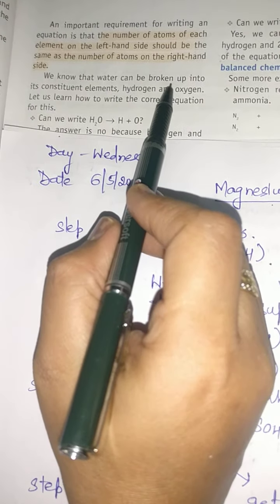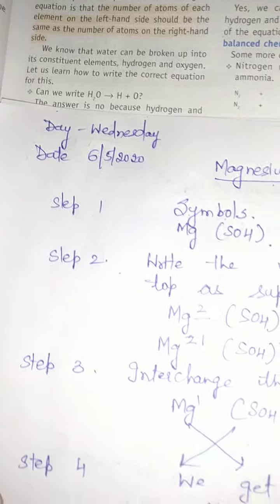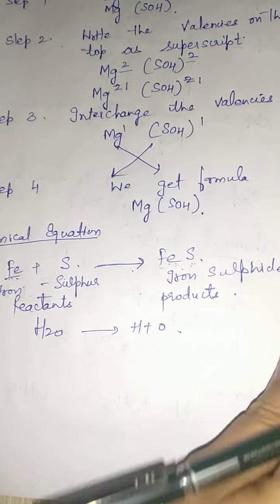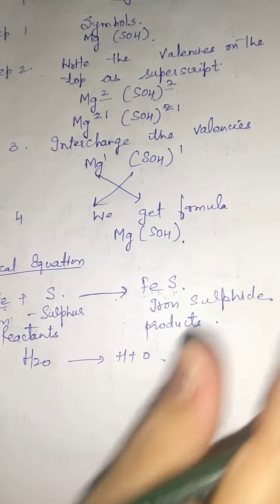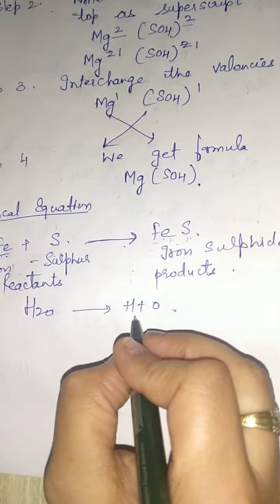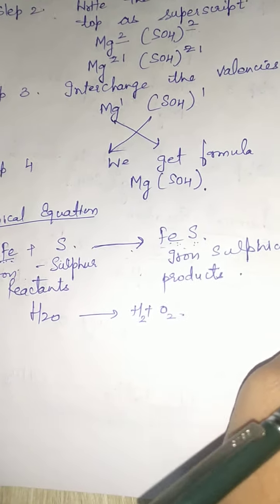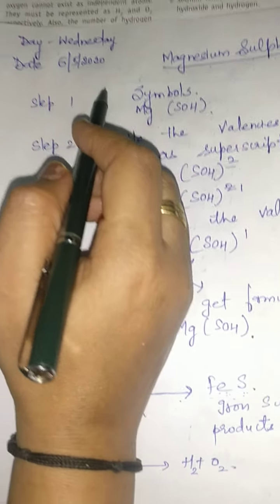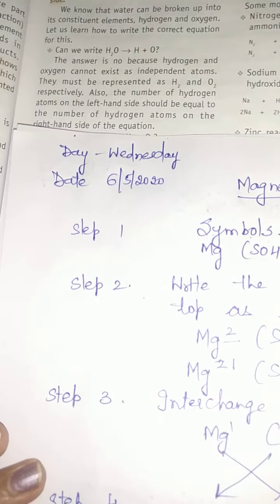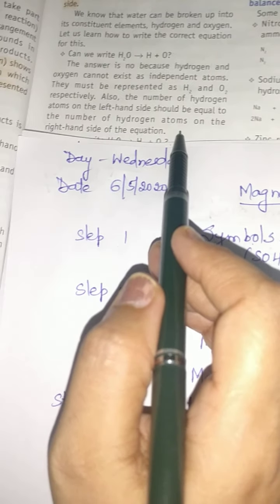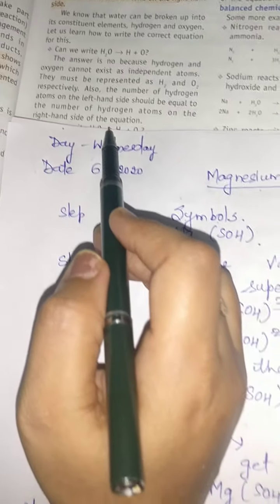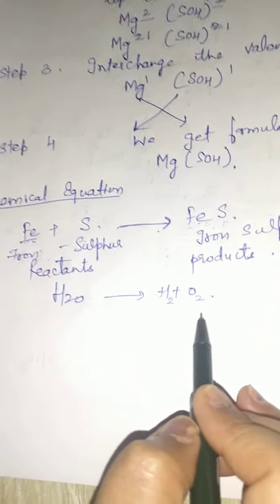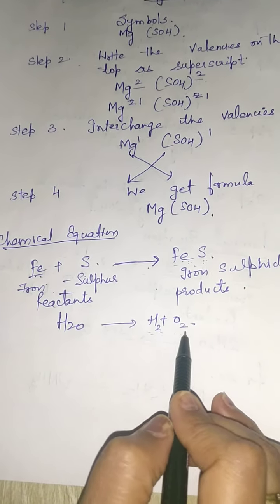We know that water can be broken up into its constituent elements hydrogen and oxygen. But writing just hydrogen and oxygen is not correct, because hydrogen and oxygen exist in pairs — they are diatomic in nature. Also, the number of hydrogen atoms on the left hand side should equal the number on the right hand side. Since hydrogen and oxygen are diatomic, I have written H2 and O2.